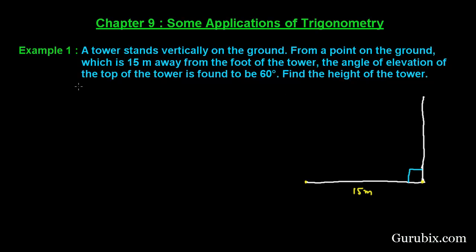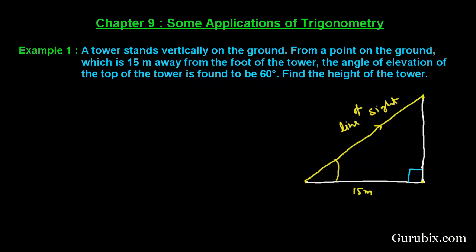The angle of elevation of the top of the tower is found to be 60 degrees. This means if we see the top of the tower, this is the line of sight, and this line of sight makes an angle with the horizontal level — or we can say with the ground — of 60 degrees. This is the angle of elevation. We have to find the height of the tower, and we let that height be h meters.